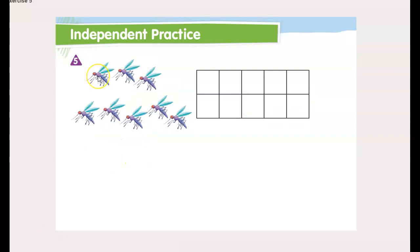Alright, let's count these dragonflies: 1, 2, 3, 4, 5, 6, 7, 8. So I'm going to put my counters, and I'm just going to use all yellow for this: 1, 2, 3, 4, 5, 6, 7, 8. Okay, so there's my 8.